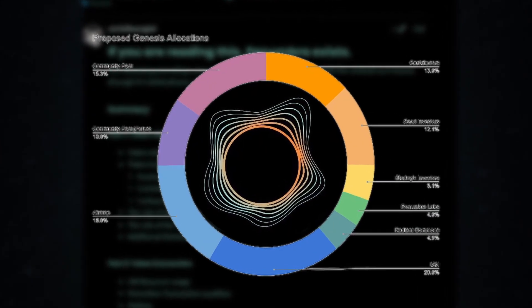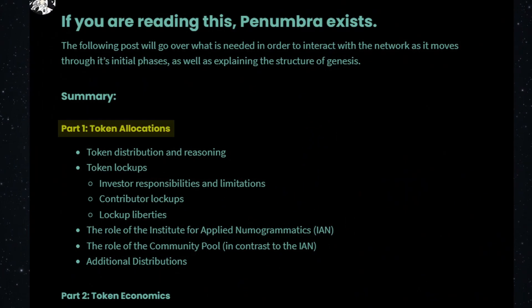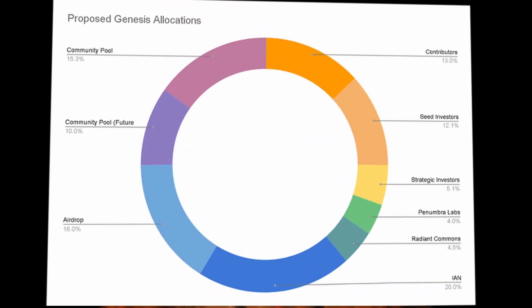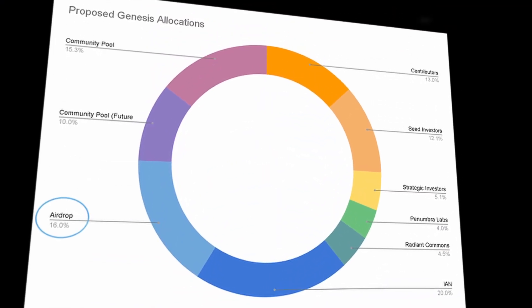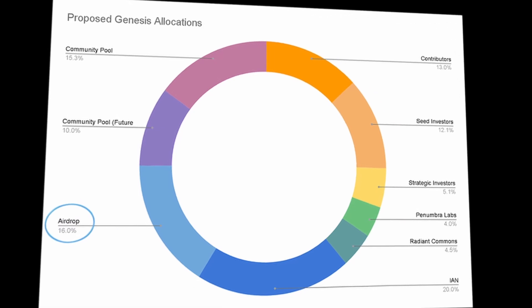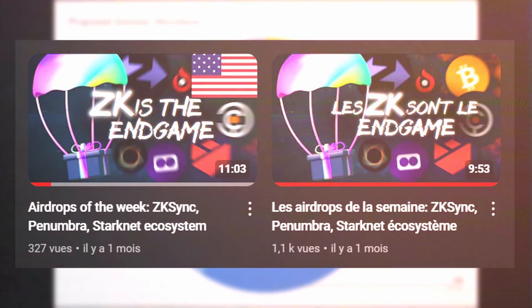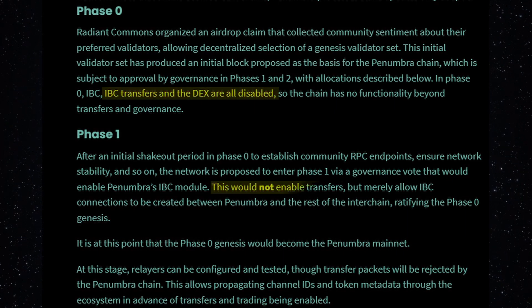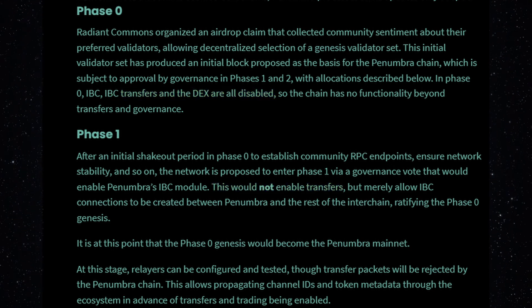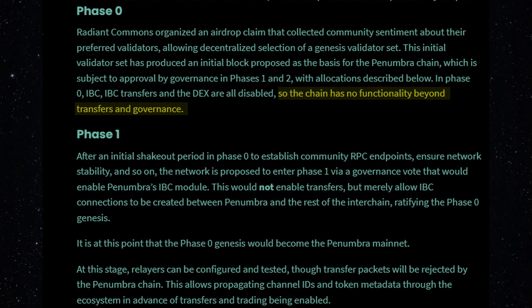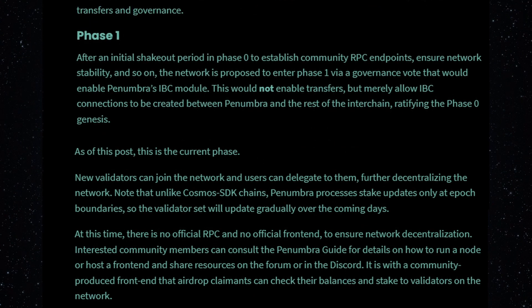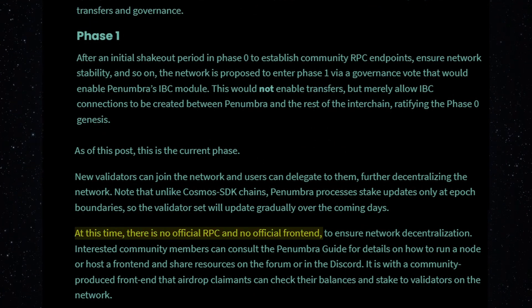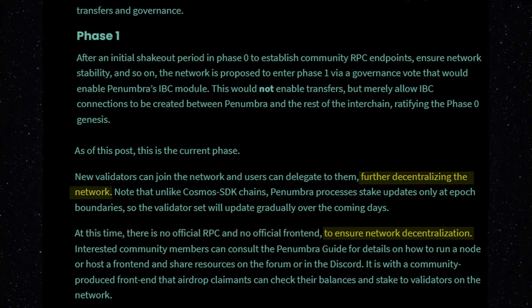The Penumbra team has announced the tokenomics and different launch phases for the token and features. We have just entered Phase 1. In Phase 0, the airdrops were claimed. If you want a presentation of the project and eligibility conditions, check out the previous video. In Phases 0 and 1, IBC transfers and the DEX are disabled. Only governance, transfers between wallets, and delegation are functional.